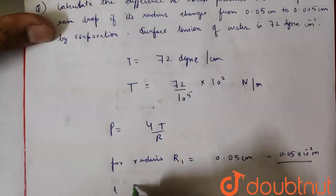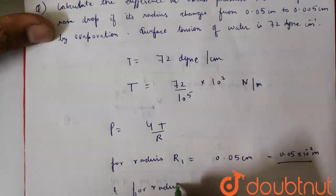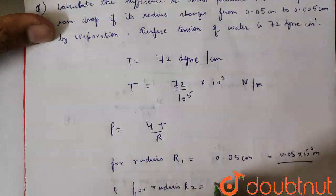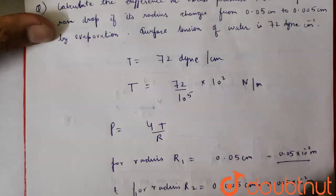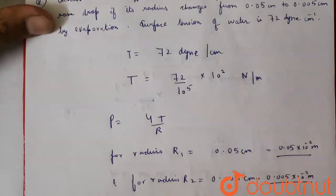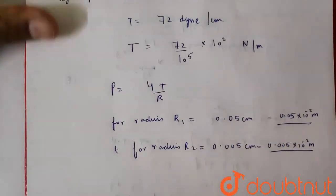And for radius r2, that is 0.005 cm, that is 0.005 times 10 to the power minus 2 meter.